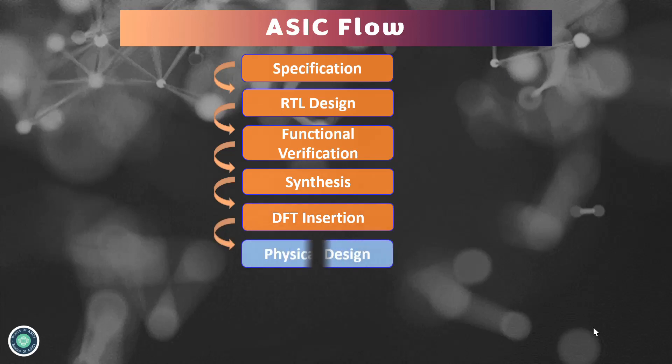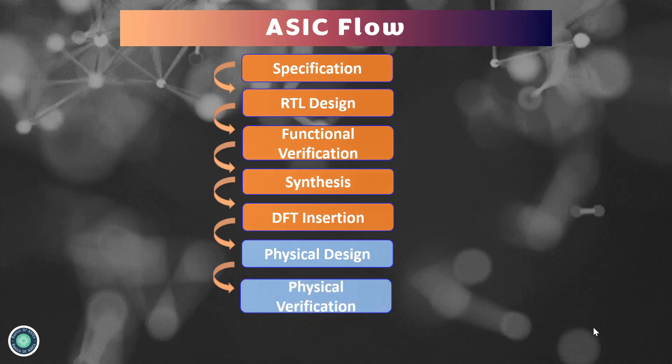After DFT, the next step is physical designing. In this step, the circuit diagram is converted into a geometrical shape called the layout. The physical layout of the ASIC is designed and implemented in multiple steps, including placement and routing of the various components on the chip, as well as optimizing the layout for performance, power, and other requirements. Once physical designing is done, it is tested and verified against design rules — this is called physical verification — ensuring that the specified requirements and functions are as expected.